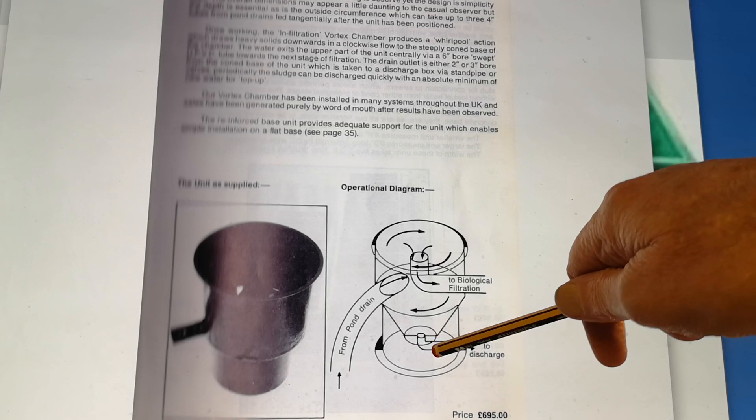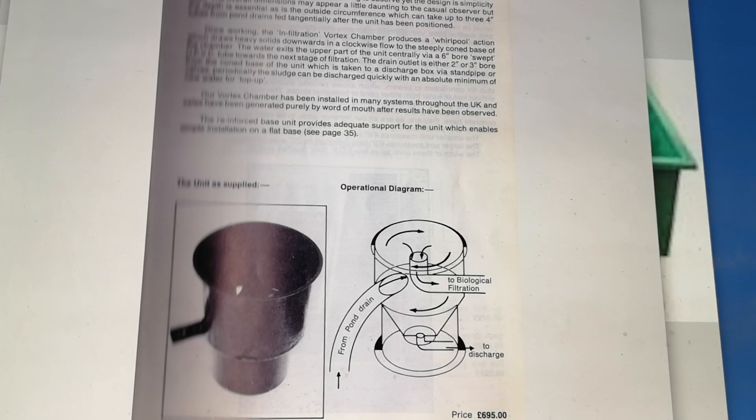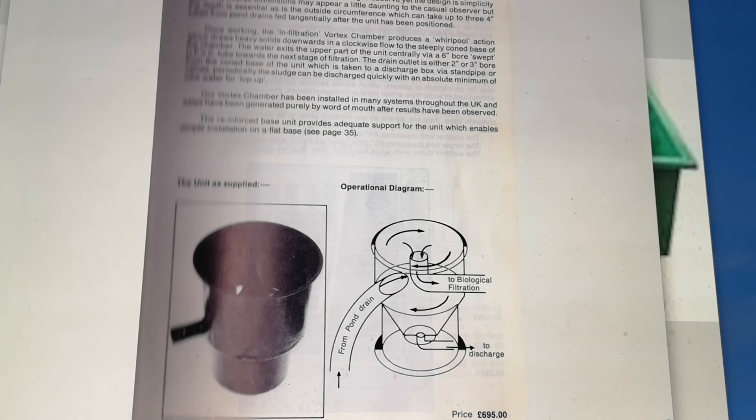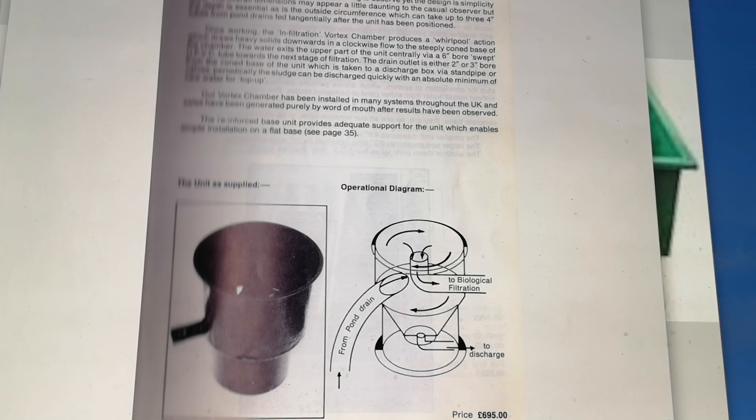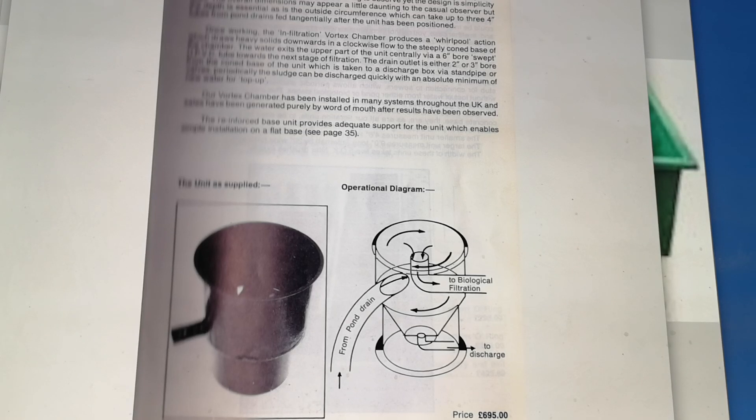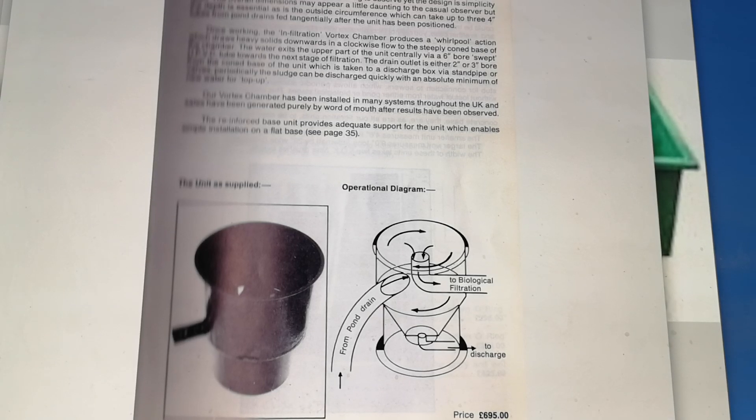Take the shape of the filter down to a cone shape at the base, put a drain in it, and then open a valve to send it to discharge.